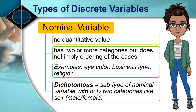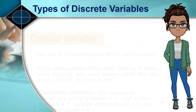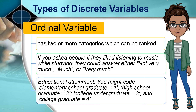Discrete variables can be further categorized as nominal and ordinal. A nominal variable is a variable with no quantitative value — it has two or more categories but does not imply ordering of cases. Common examples include eye color, business type, and religion. A subtype of nominal scale with only two categories, just like sex — male or female — is known as dichotomous. An ordinal variable is a variable that has two or more categories which can be ranked. For example, if you ask people if they like listening to music while studying and they could answer not very much, much, or very much, you have an ordinal variable. While we can rank them, we cannot place a numeric value on them.